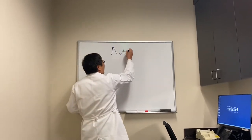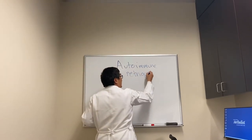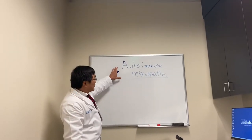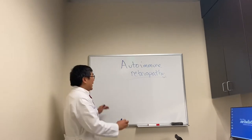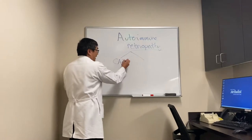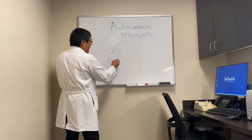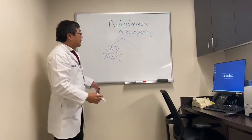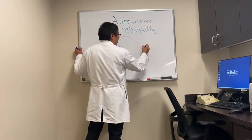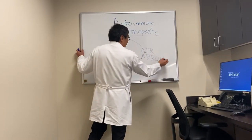Today we're going to be talking about autoimmune retinopathy. This comes to neuro-ophthalmology because the retina often looks normal in the beginning. There are two types: one is associated with cancer, called cancer-associated retinopathy (CAR); sometimes the malignancy is melanoma, called melanoma-associated retinopathy (MAR); and if there's no cancer, it's an autoimmune-mediated retinopathy or autoimmune retinopathy and related optic neuropathy.